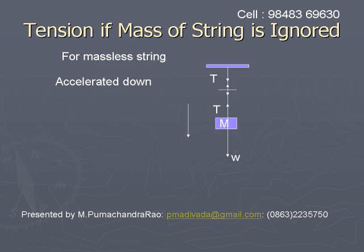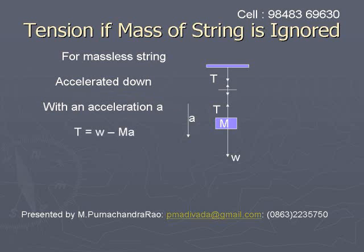If the same system is moving down with an acceleration A, then the tension will be equal to W minus MA.